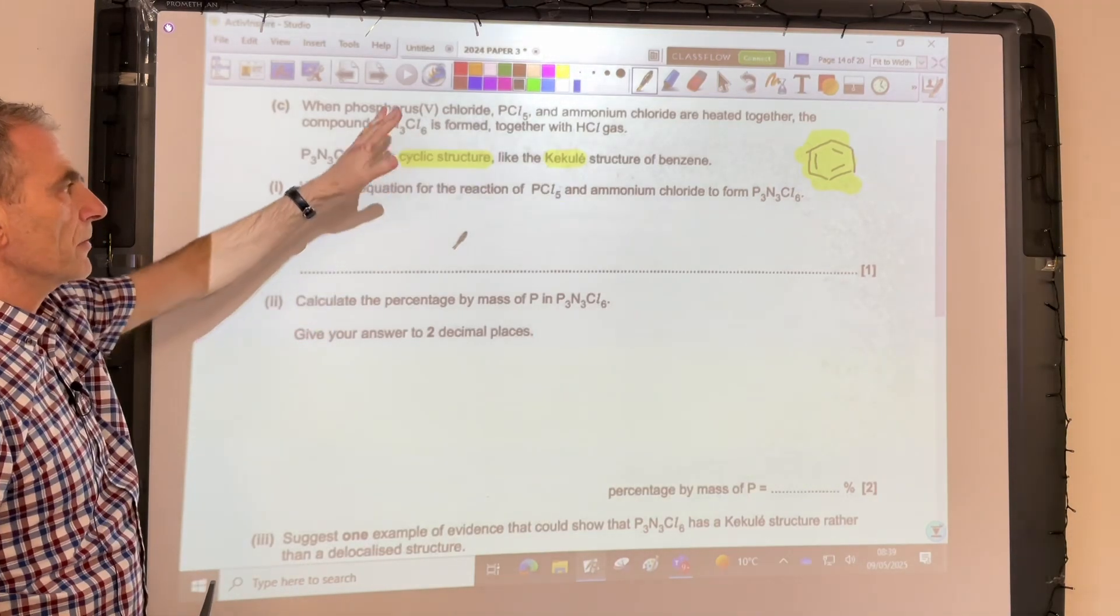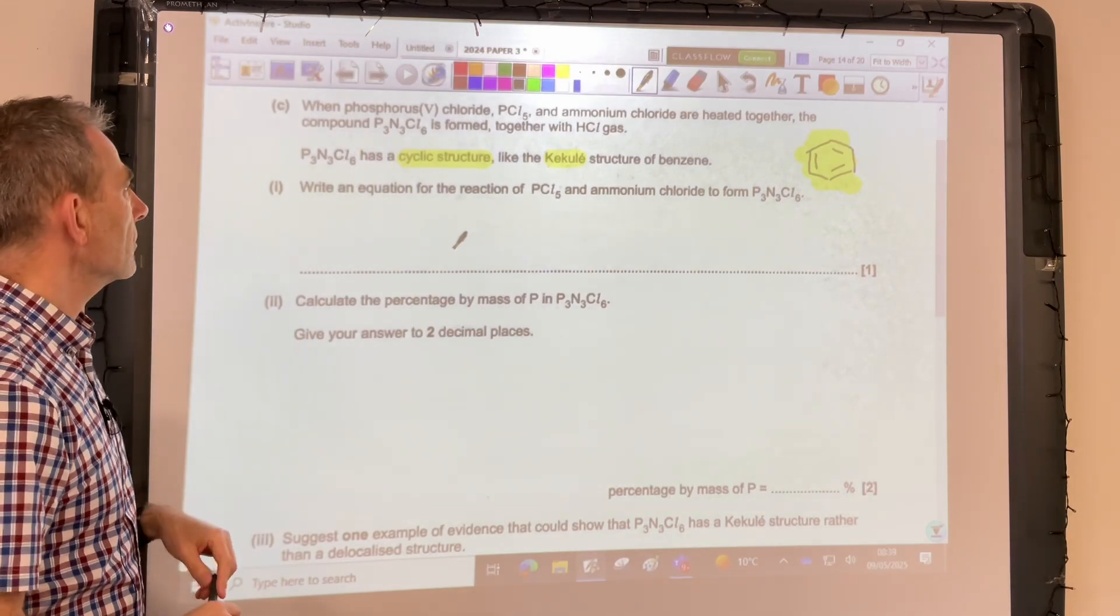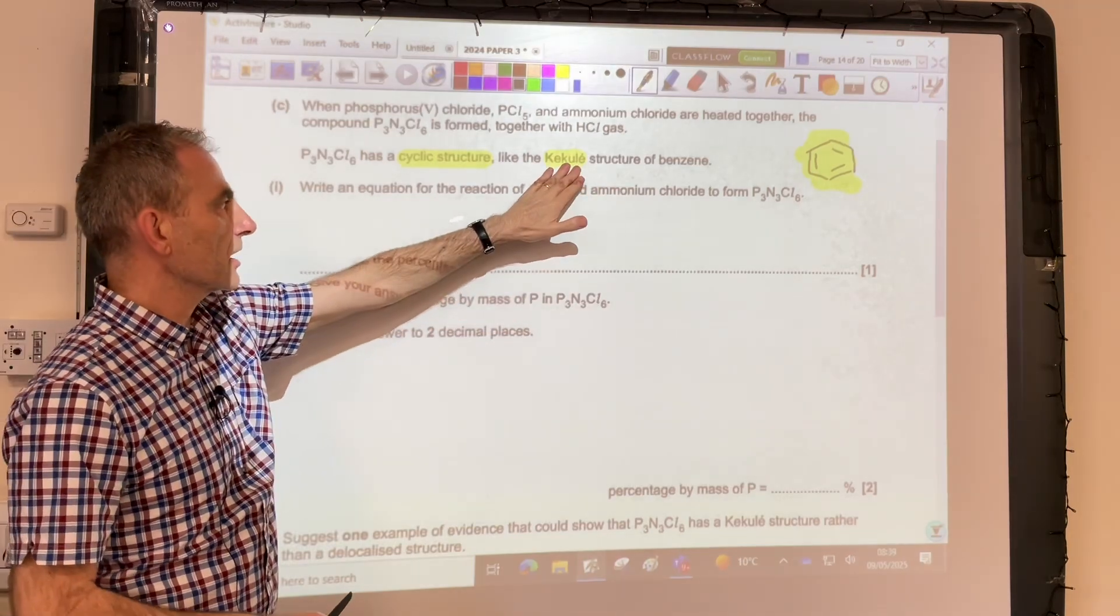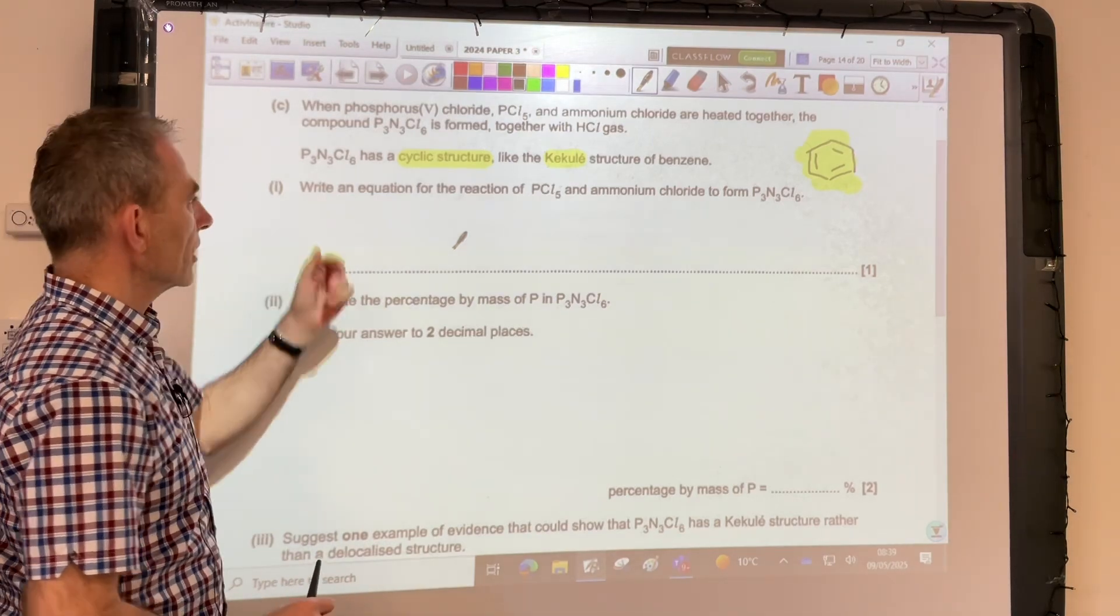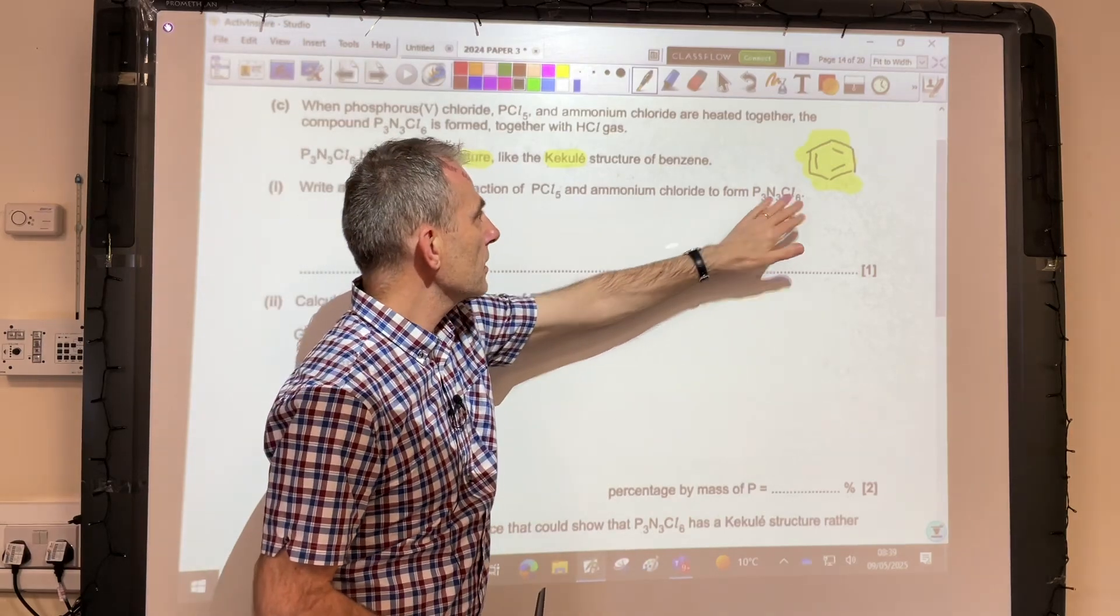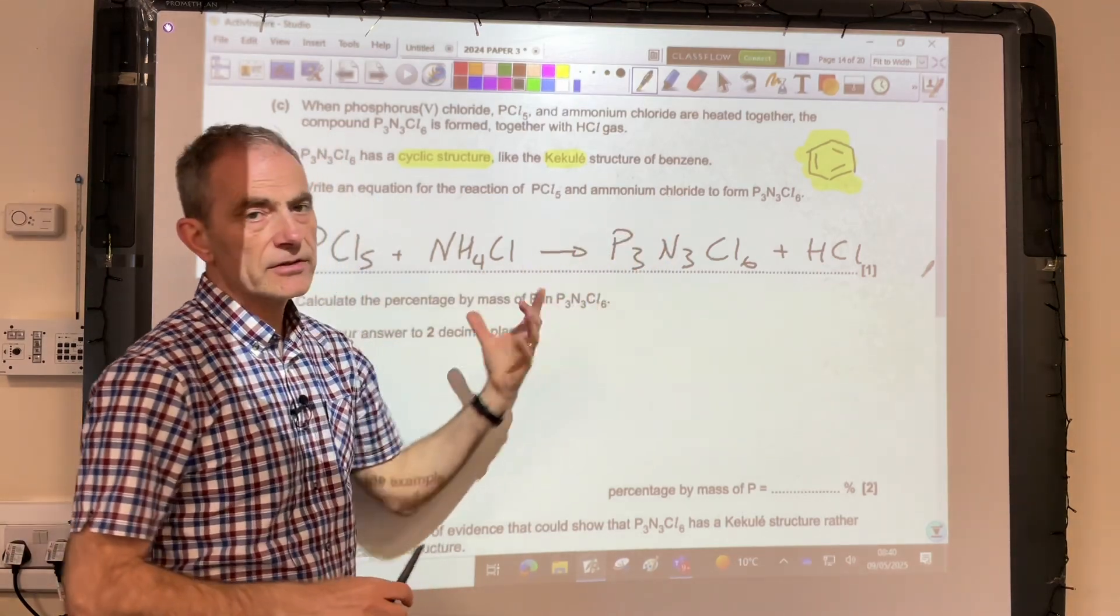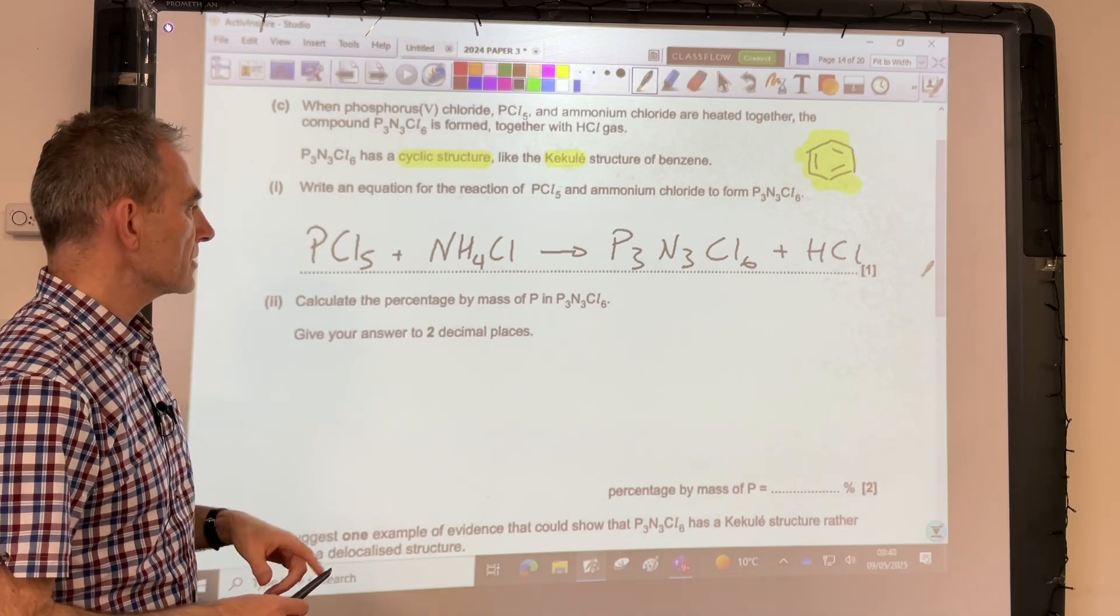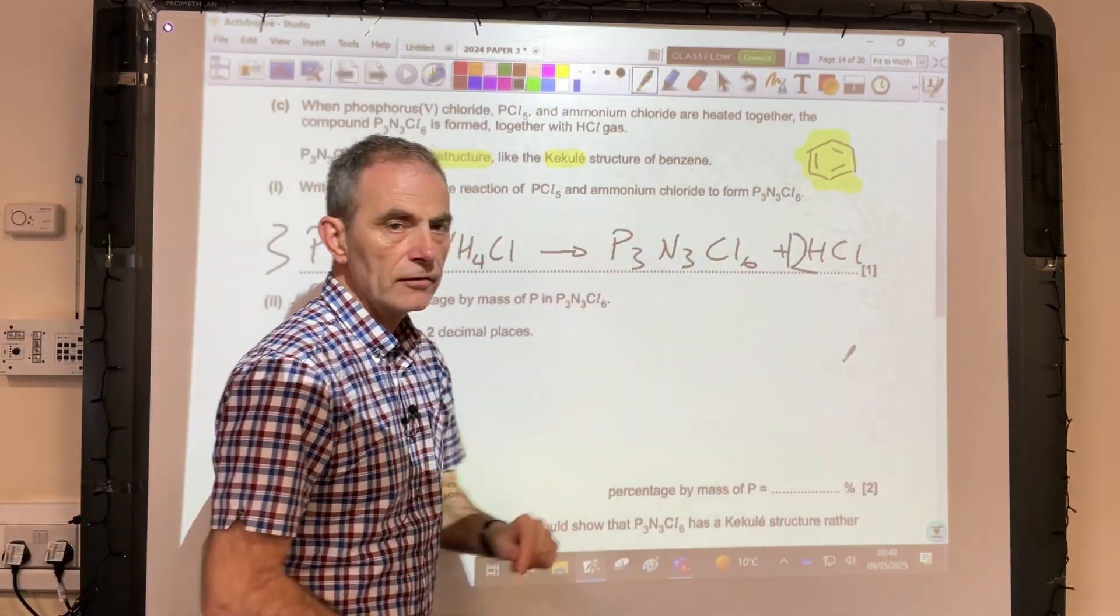Moving on to part C, so we've got some information about this compound P3N3Cl6. So we're told it's got a cyclic structure, so it's a ring, and it's got a structure like the Kekulé structure for benzene. So you'll notice I've drawn that up there. So the first thing we've got to do is write an equation for the reaction of PCl5 and ammonium chloride to form this substance here. So there's the unbalanced equation. We weren't given the formula of ammonium chloride, so we're expected to know that from memory. NH4Cl. So I'll just balance it now. PCl5, 3NH4Cl, one of those, and 12 moles of HCl.